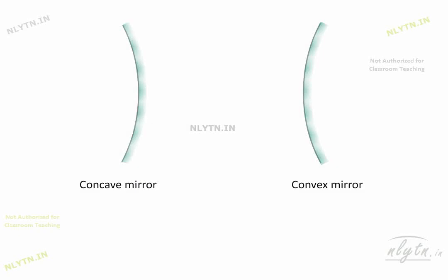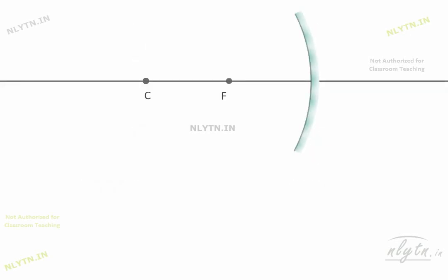In this section, we will discuss some properties of the image formed by spherical mirrors, but without going into any equations. Let us start with the concave mirror and let us say that its radius of curvature is equal to r and focal length is equal to f.